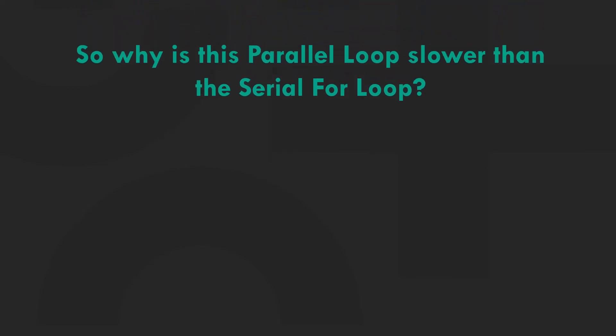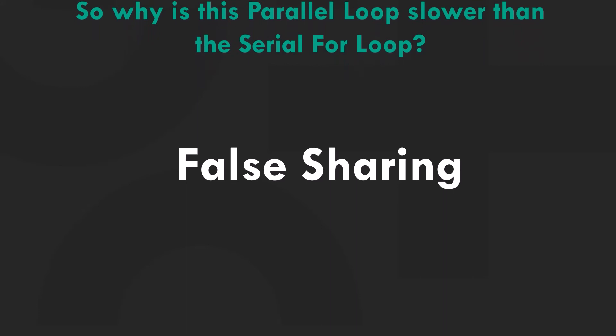So why is this parallel loop slower than the serial for loop? Two words: false sharing. This concept is out of the scope of this video but I'll still try explaining it in simple terms. This has something to do with our thread_sum array. Processors usually have a cache between the high speed registers of the CPU and the slow memory.